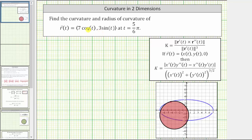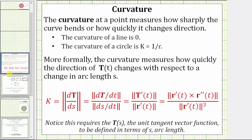Let's review curvature and radius of curvature. The curvature at a point measures how sharply the curve bends, or how quickly it changes direction. The curvature of a line is zero, and the curvature of a circle is equal to the reciprocal of the radius. More formally, the curvature measures how quickly the direction of the unit tangent vector changes with respect to a change in arc length s.